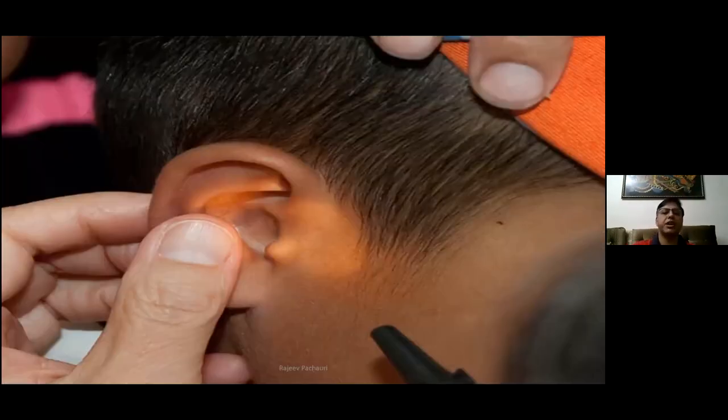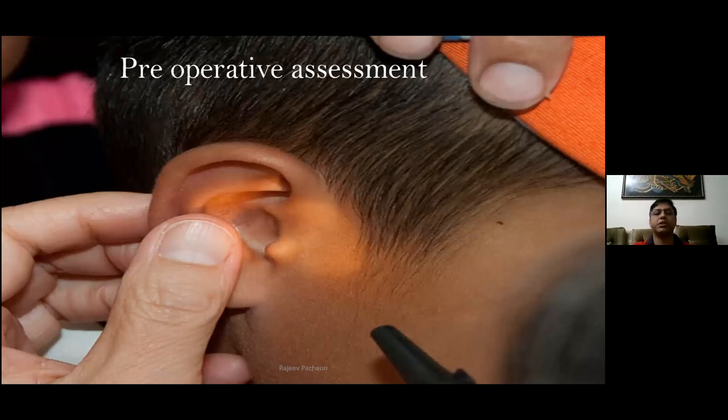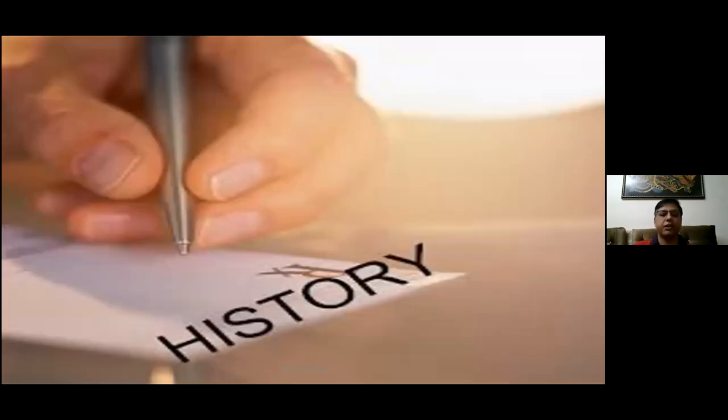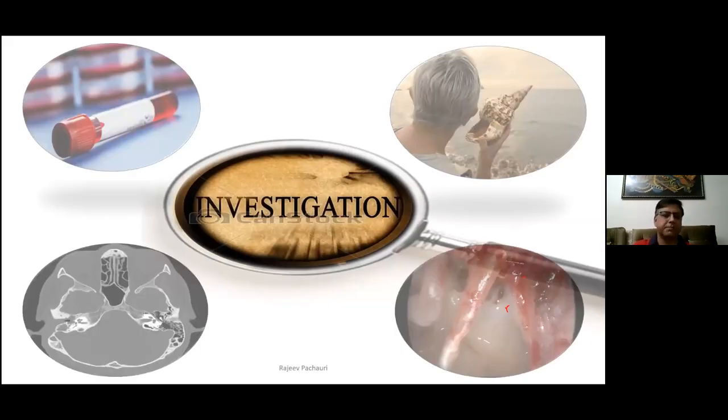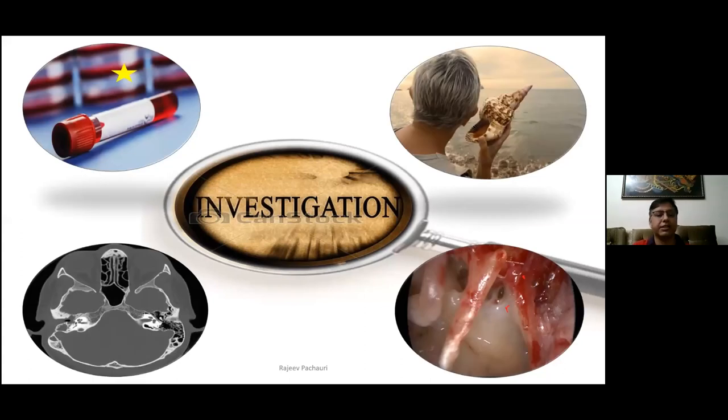When a patient comes to you, never let staff or an assistant take history — do it yourself. Do your own otoscopy; see things yourself, take a proper history. Never rely on the staff's written history, because sometimes on the table you find different things. The history written on the file may differ from what the patient tells you before surgery, and that decides your surgical plan. For investigations, CT scan versus X-ray is important — all know the standard otological investigations.